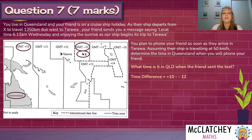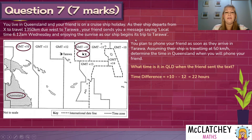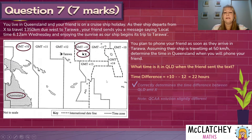The time difference: I subtract negative 12 from 10. Remember, negative minus negative becomes positive, so it's the same as adding: 10 plus 12 equals a 22-hour time difference. Some people will get that wrong, but even with a negative value you apply negative minus negative to make it positive. Position X is 22 hours behind Queensland time. I get my first mark here for correctly determining that time difference between Queensland and X.